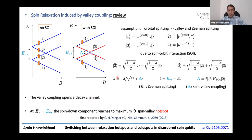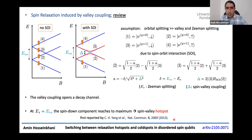As you can see from these relations, when the Zeeman splitting equals the valley splitting, the spin-down component is at its maximum. Therefore at this condition, the decay from the excited state to the ground state becomes maximum. This is known as the spin-valley hotspot, and it was first demonstrated experimentally in this paper here.